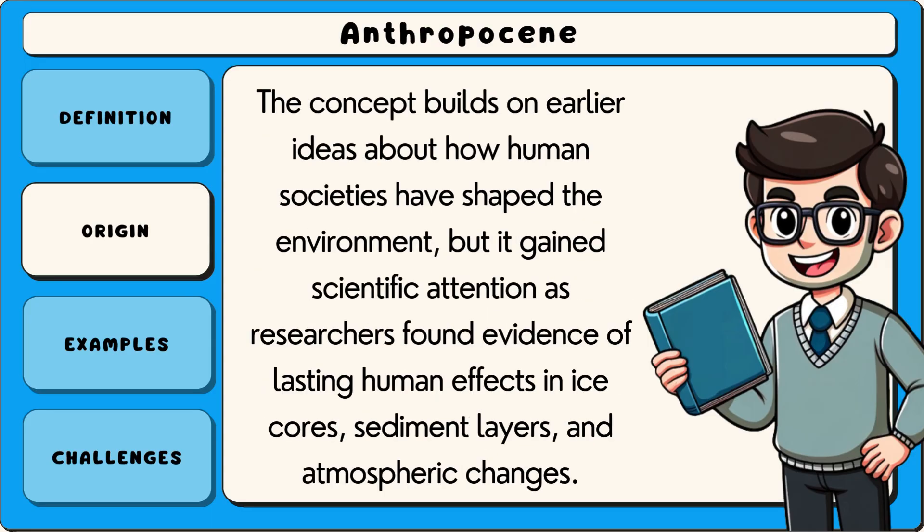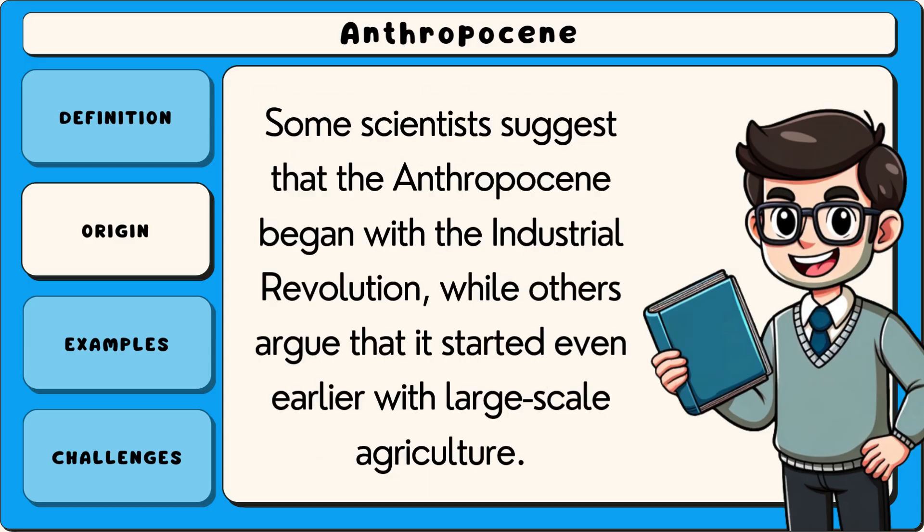The concept builds on earlier ideas about how human societies have shaped the environment, but it gained scientific attention as researchers found evidence of lasting human effects in ice cores, sediment layers and atmospheric changes. Some scientists suggest that the Anthropocene began with the Industrial Revolution, while others argue that it started even earlier with large-scale agriculture.